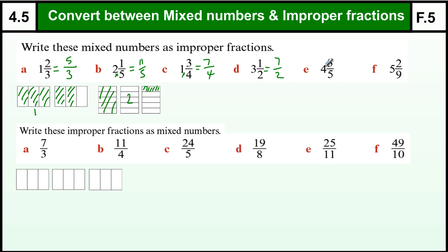4 and 3/5: each of those 4 wholes is broken up into 5 equal pieces, so that is 4 lots of 5 is 20, plus the 3 is 23 pieces, and they are all fifths.